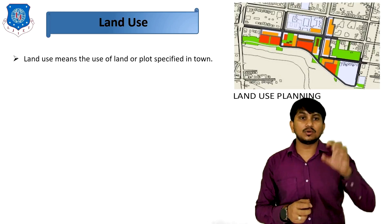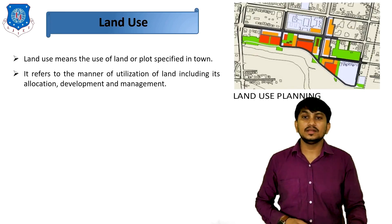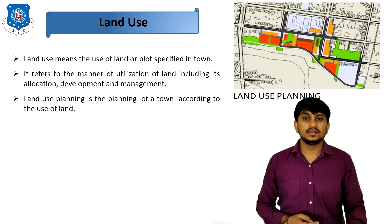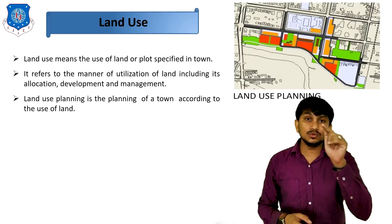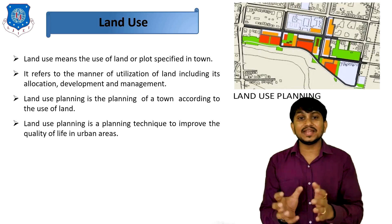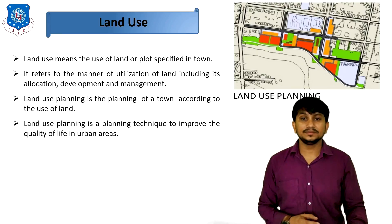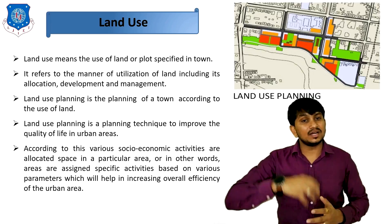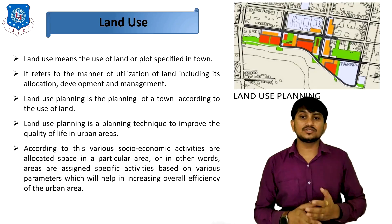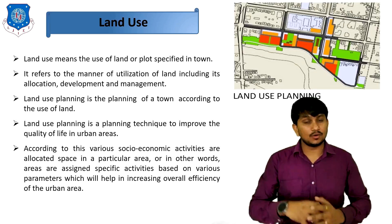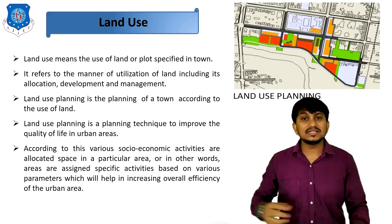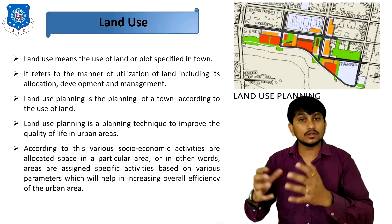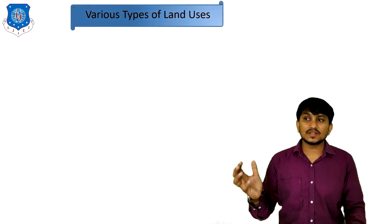Land use means the use of land or plot specified in the town. In the figure you can clearly see all the area of the town is allocated for a particular type of use. It refers to the manner of utilization of land, including its allocation, development, and management. Land use planning is the planning technique to improve the quality of life in urban areas, where various social and economic activities are allocated space in particular areas to increase the overall efficiency of the urban area.